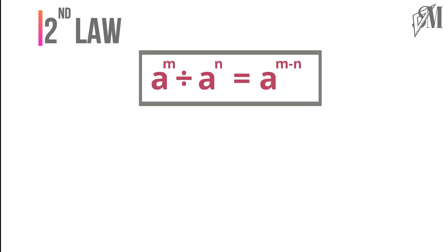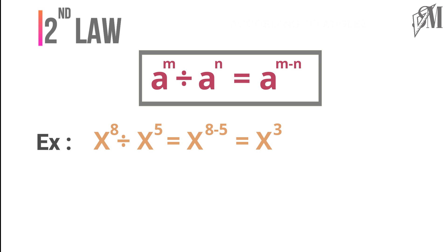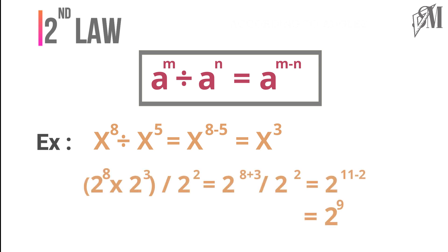The second law says the quotient of powers with the same base is equal to the same base raised to the difference of indices. That is, x⁸ ÷ x⁵ = x^(8−5) = x³. Note that the index of the divisor is always subtracted from the index of the dividend. For example, 2⁸ × 2³ ÷ 2² — first add 8 + 3 to get 2^11, then subtract 2 to get 2⁹.